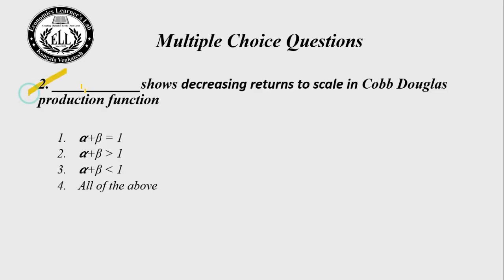Question 2: Which condition shows decreasing returns to scale in the Cobb-Douglas production function? (1) α+β=1, (2) α+β>1, (3) α+β<1, (4) all of the above. The Cobb-Douglas function assumes constant returns to scale when α+β=1. For decreasing returns to scale, the sum of the factor elasticities must be less than one. The answer is choice 3: α+β < 1.